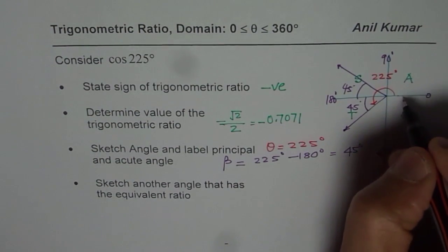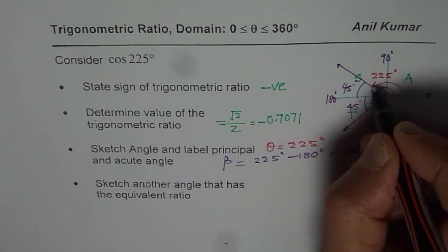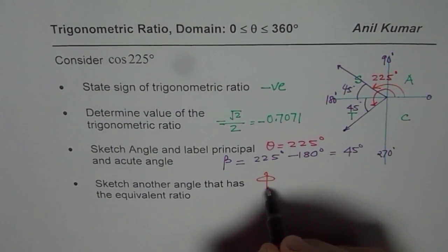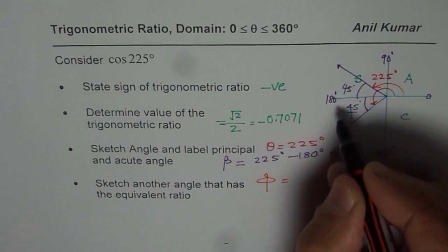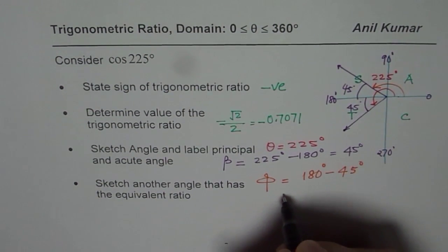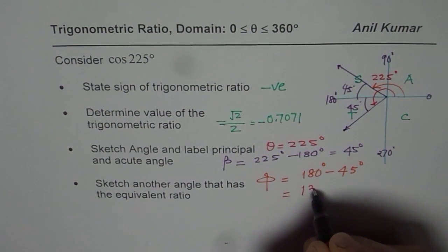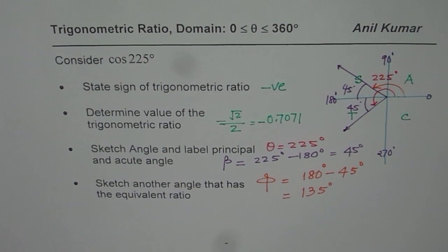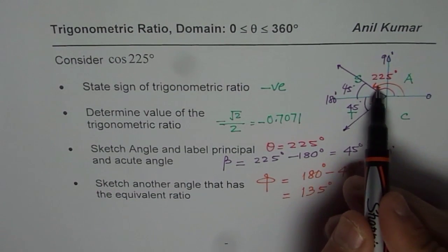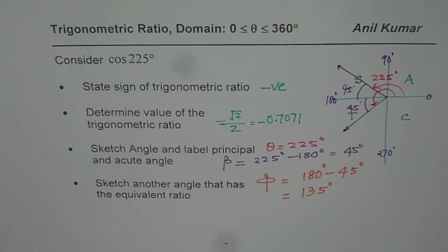Now, the principal angle is how much? That is the principal angle. So, let me call this angle as phi. And this phi for us is 180 degrees minus 45 degrees. And that is 135 degrees. So, that becomes another angle, principal angle, which gives us the same result.